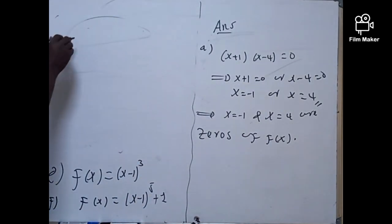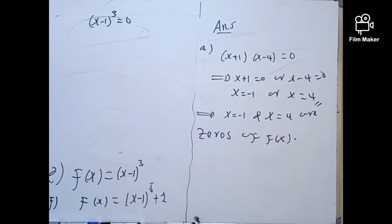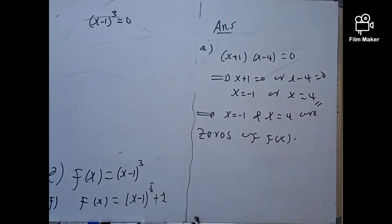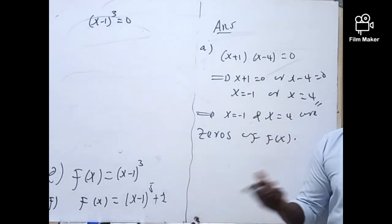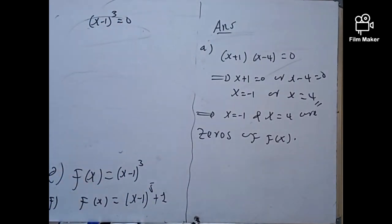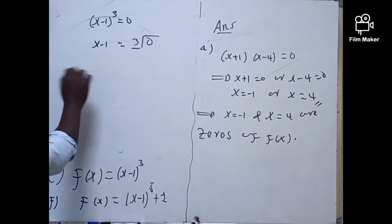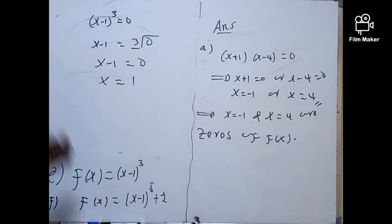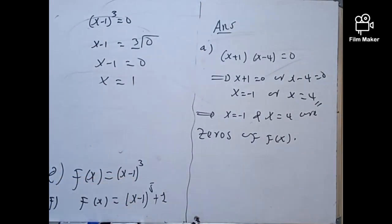Next, let's find the zero of the polynomial f(x) = (x - 1)^3. In order to find the zero, we have to set F(x) equal to zero: (x - 1)^3 = 0. Taking the cube root of both sides, x - 1 = 0, so x = 1. Therefore, f(x) = (x - 1)^3 has one zero, which is x = 1.